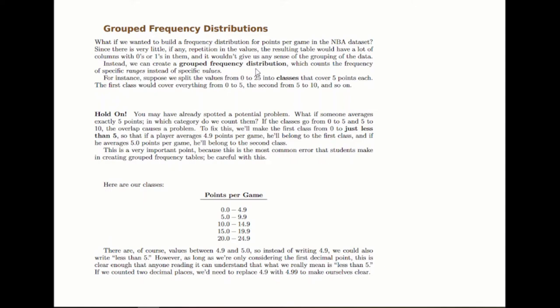Then we have grouped frequency distributions. Instead of listing all possible values, let's talk about ranges instead. If you're looking at points per game, there's not much repetition in the data, but you can divide them into ranges. The first would be everything from 0 to 5, then 5 to 10, and so on. But the most important thing is that if you just do it like that, there's some overlap. If somebody averaged exactly 5 points per game, they would fall into both categories, which would be problematic. So we separate them, from 0 to just less than 5, and then from 5 to just less than 10.